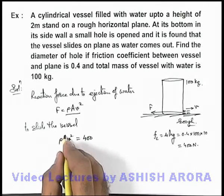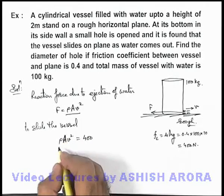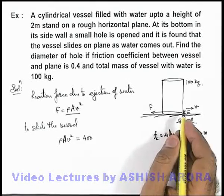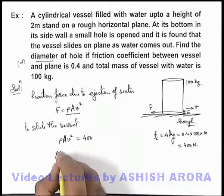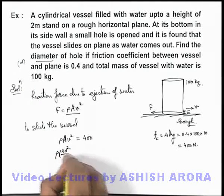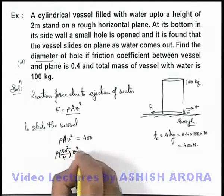The area of cross section of this hole can be written in terms of its diameter. If diameter is taken as d, so I can write it πd²/4. v² is 400.